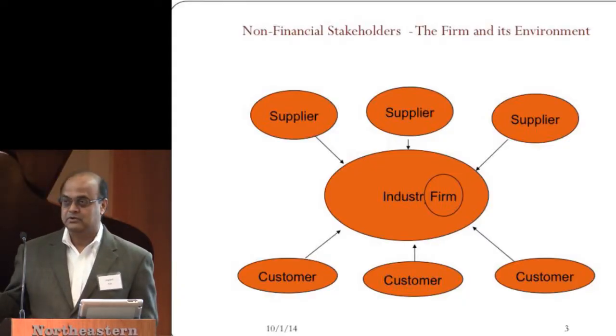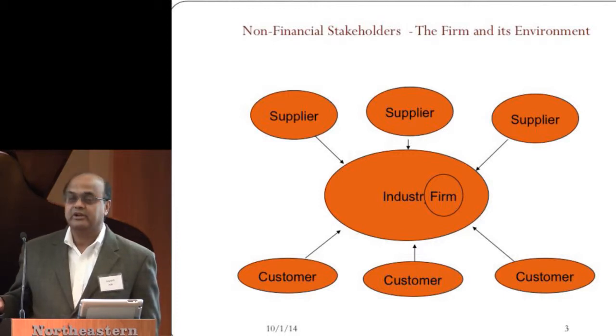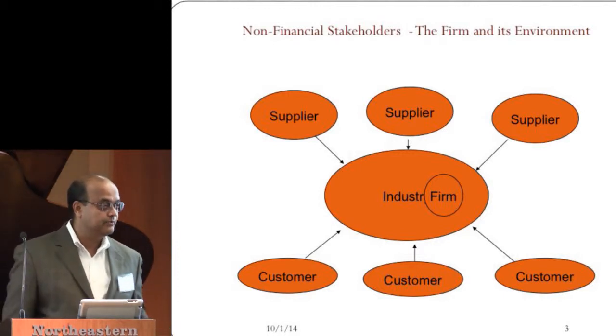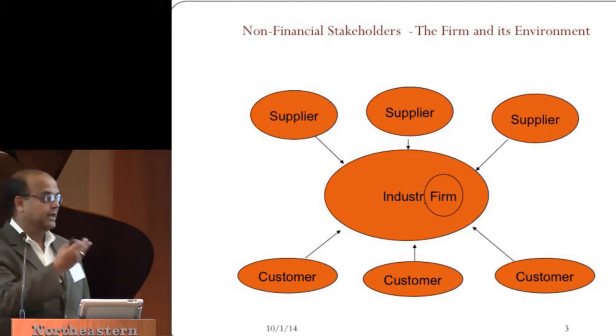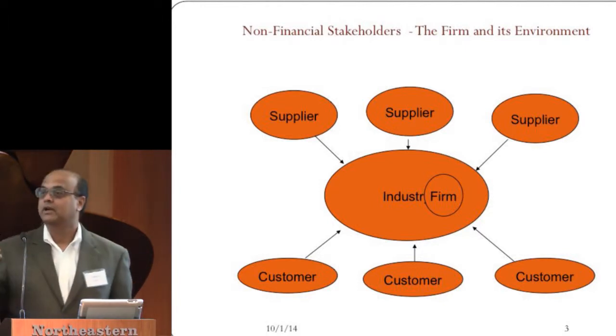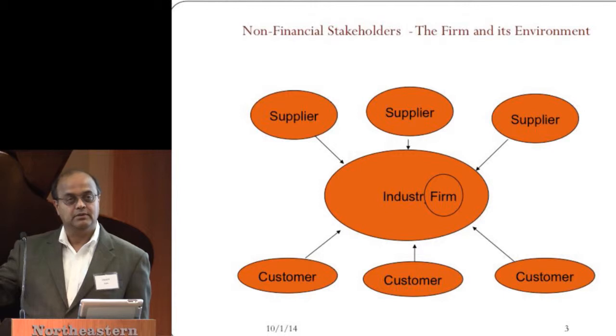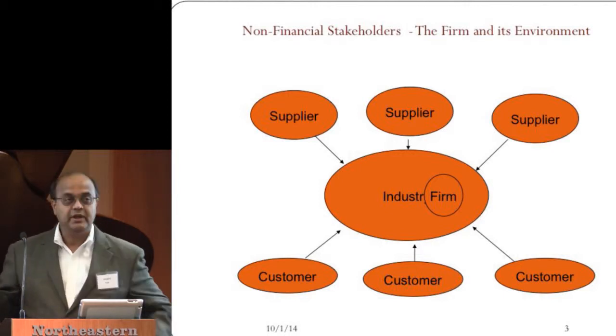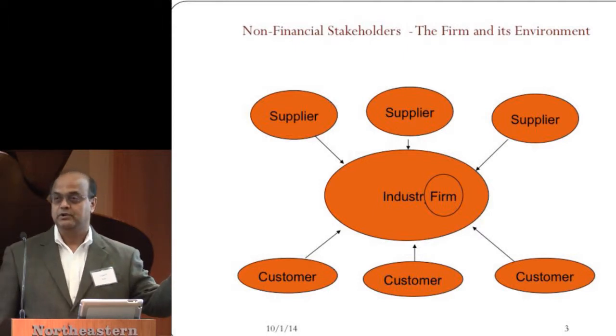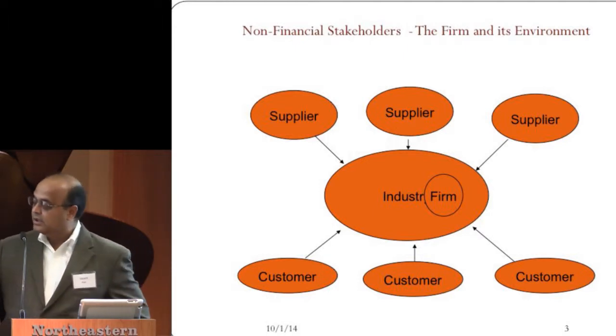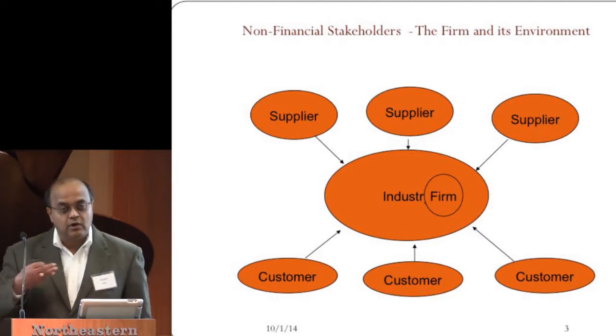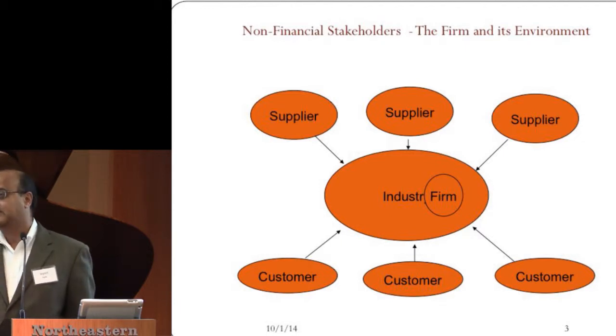So what do I mean by non-financial stakeholders? If you look at the firm — and this is what finance has mostly been concerned with — the firm belongs to an industry, is supplied by a bunch of suppliers, and also has customers who may be industries too. In addition, the firm also deals with labor and the government and other regulatory agencies. These are all the non-financial stakeholders. The financial stakeholders would be people who are directly claimants on the firm, such as bondholders and stockholders. But the interests of these non-financial stakeholders are also important for the performance of the firm — and that's what a lot of my research shows.